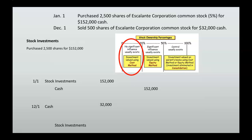For the stock investments credit, we need to do a little math. We initially purchased 2,500 shares for $152,000, so we need to figure out the per-share amount. We take $152,000 divided by 2,500 shares, and we get $60.80 per share. In this transaction we sold 500 shares, so 500 times $60.80 equals $30,400. So our stock investments are decreasing by $30,400.